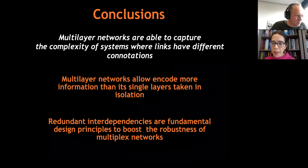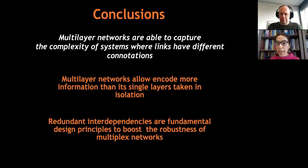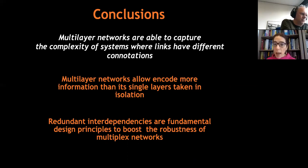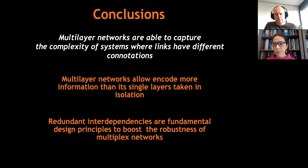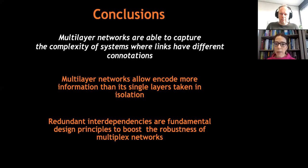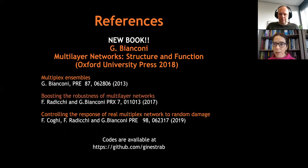In conclusion, I wanted to describe multilayer networks that are able to capture the complexity of systems where links have different connotations. These systems allow including more information than single layers taken in isolation. They are very useful structures for studying dynamics, and as an example we have seen the role of robustness and redundancy of interdependencies. These are the links and you are free to look at the GitHub page for some code. Thank you so much for your attention.